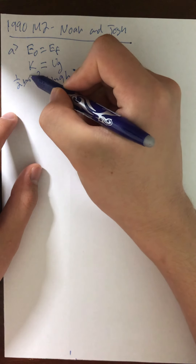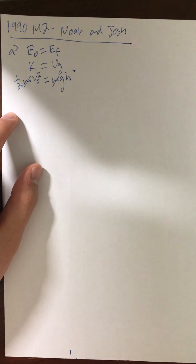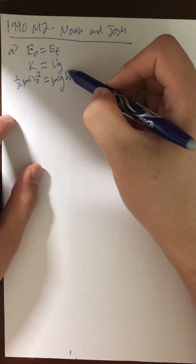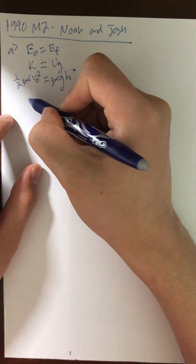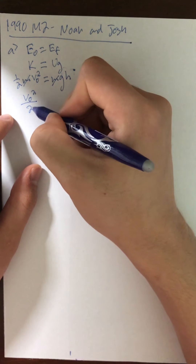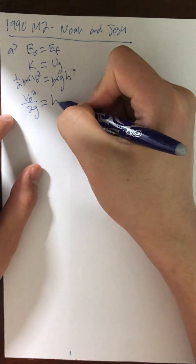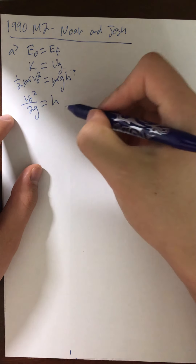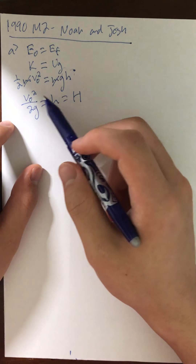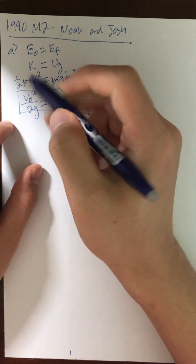If we cancel mass from each side, mass is not relevant to how high this block will rise — it could be one kilogram or a million kilograms and it would still be the same. We can isolate H: v-initial squared over 2, divide g from both sides, giving 2g equals h. So capital H equals v-initial squared over 2g. That's the first part.